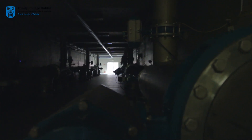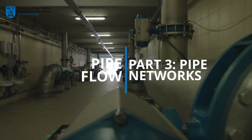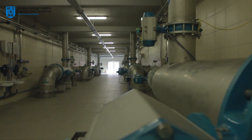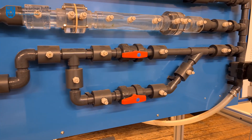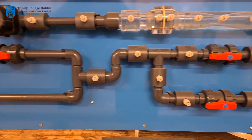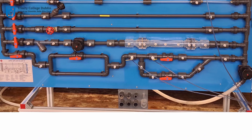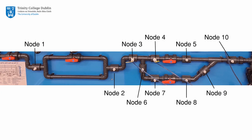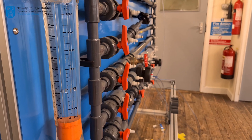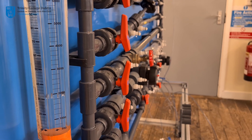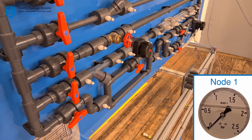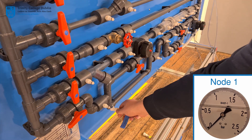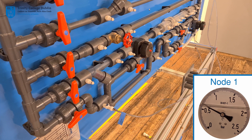Part 3: Flow and head loss through a pipe network containing parallel pipes and local head losses. In this experiment, the magnitude of flow and head loss in each pipe within a network containing parallel pipes will be determined. The network to be analysed is as follows. As before, the flow rate entering the network is first measured using the flow meter. The head, or pressure, at each of the 10 nodes along the network is then measured and recorded.